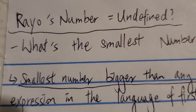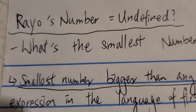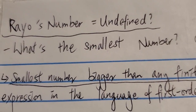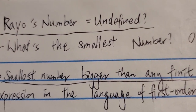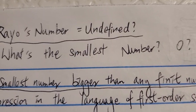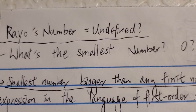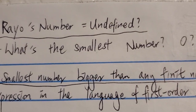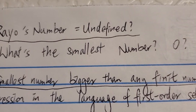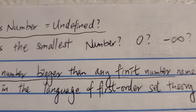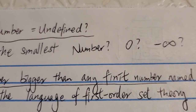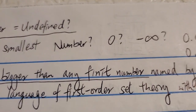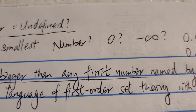Today I want to make a video on why Rayo's number might be undefined. To answer this question, first we have to ask: what's the smallest number? In Googology or on the internet, most people ask what's the biggest number — almost no one asks the opposite. This is actually very similar to the biggest number question. There is no biggest number because you can always add one to any number you define.